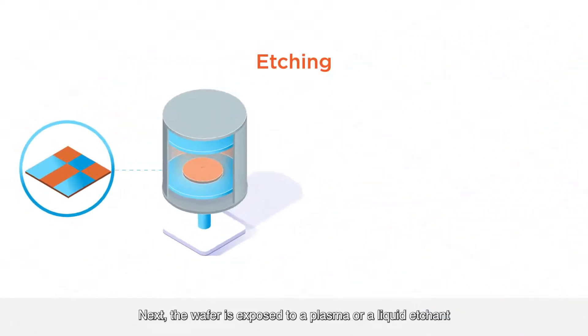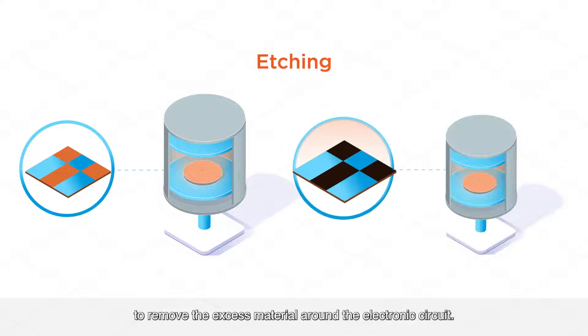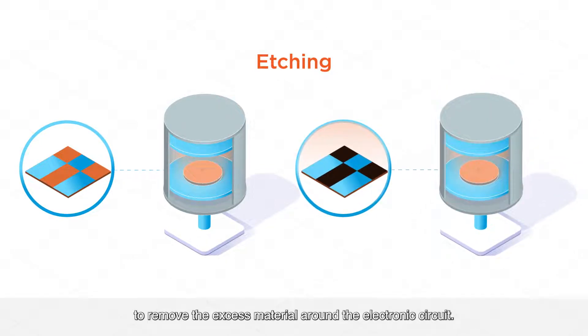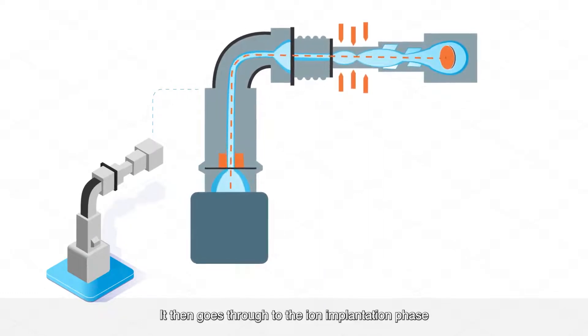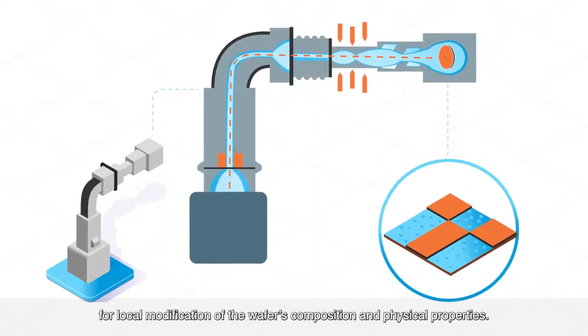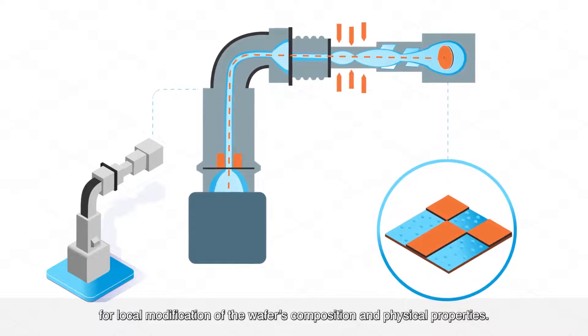Next, the wafer is exposed to a plasma or liquid etchant to remove the excess material around the electronic circuit. It then goes through the ion implantation phase for local modification of the wafer's composition and physical properties.